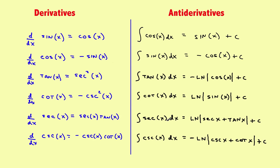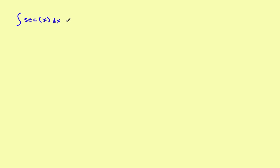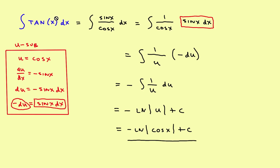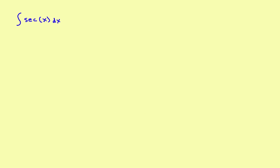Now let's do the secant, because it has a little trick that's not particularly obvious at first. When we did the tangent, we used a trig identity to get to the 1/u rule, but it's not so clear for the secant. If you start with the integral of secant of x, you have to do it a little differently.